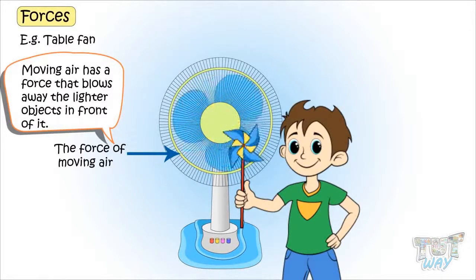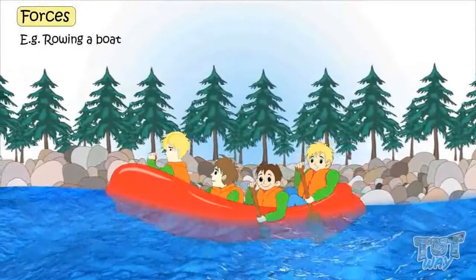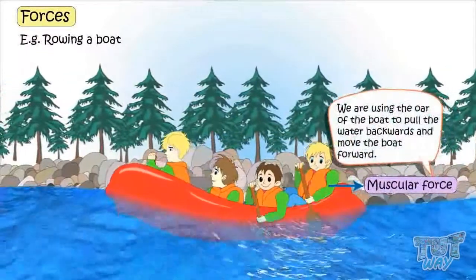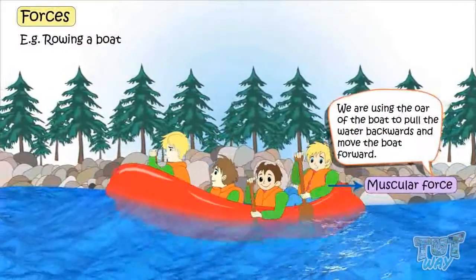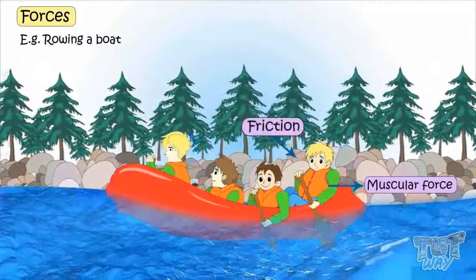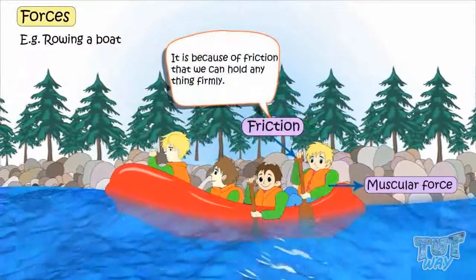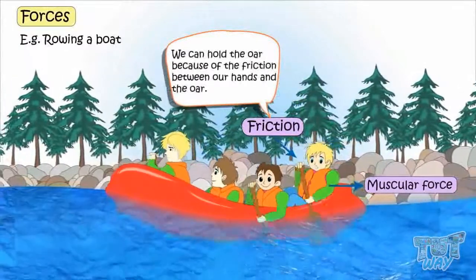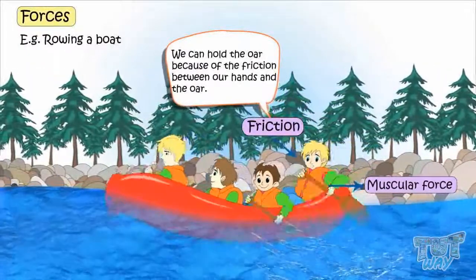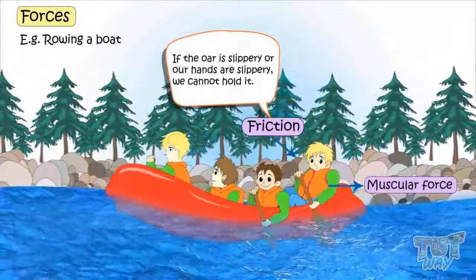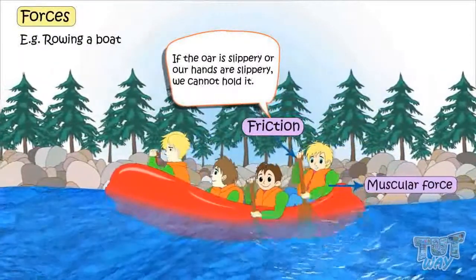And here are the forces acting while rowing a boat. Muscular force: we are using muscular force to move the oar of the boat, to pull the water backwards and move the boat forwards. Friction: it is because of friction that we can hold anything firmly. We can hold the oar because of the friction between our hands and the oar. If the oar is slippery or the hands are slippery, we cannot hold it.